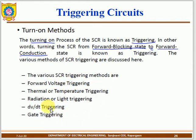Recapping the V-I characteristics diagram: the Y-axis is current (I) and the X-axis is voltage (V). When the SCR moves from the breakover voltage to the conduction region, the SCR is triggered and enters on-mode.